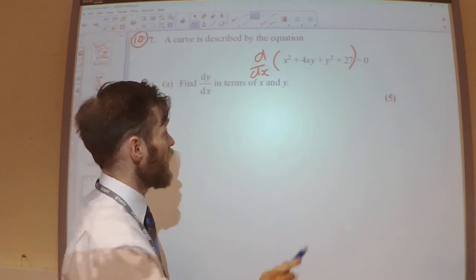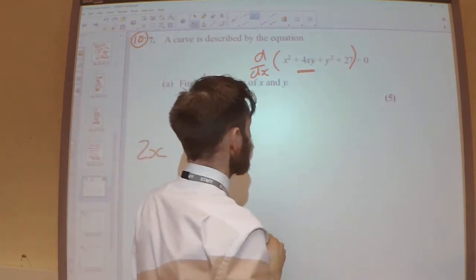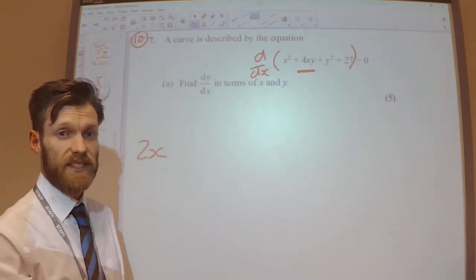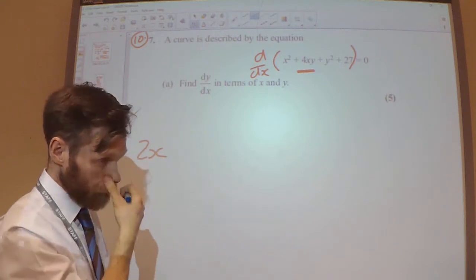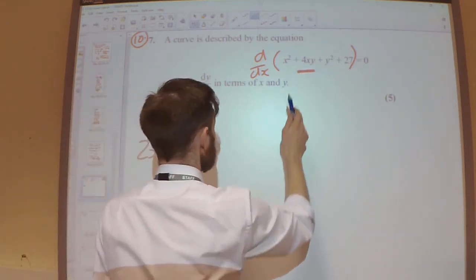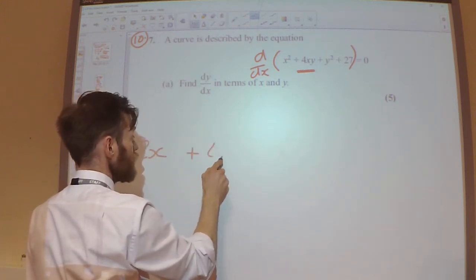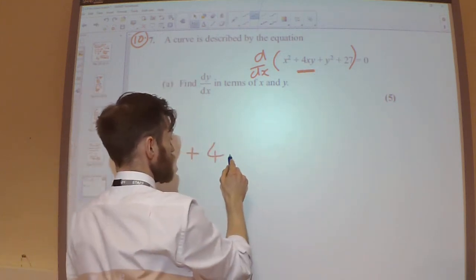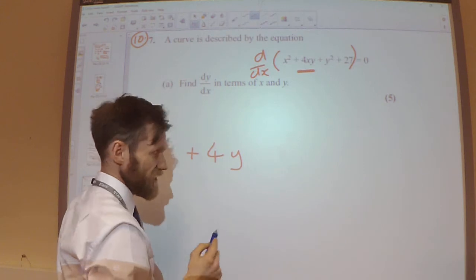Here comes the tricky part. So we're differentiating 4xy. So we need to use the product rule on this. Differentiating 4x, we get 4, and multiply that by y. That's okay, nice and simple.